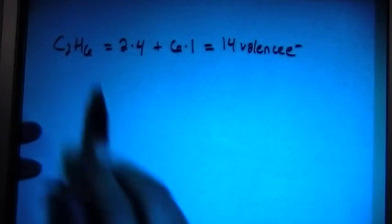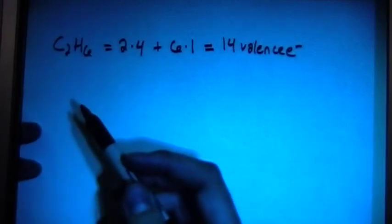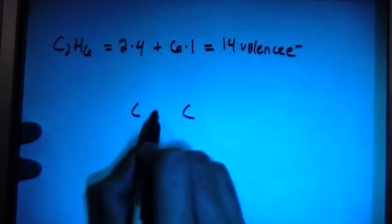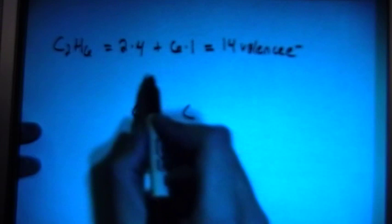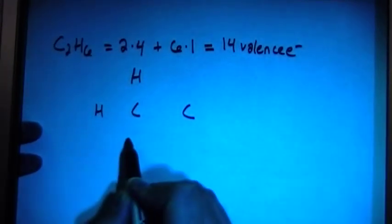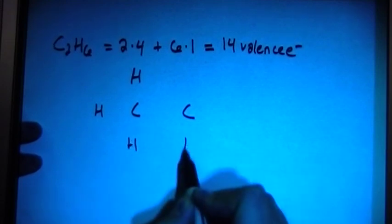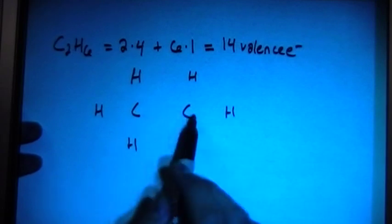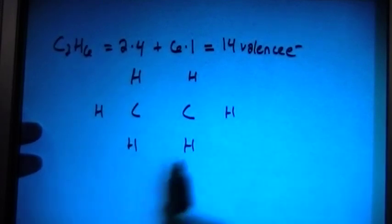Remember, hydrogens cannot be center atoms because they can only bond once. So the 2 carbons are going to have to be in the center. And we can go ahead and attach, well, let's just place the hydrogens first. Let's go ahead and put a hydrogen around each of the carbons. Like so. So now there's 2 carbons and 1, 2, 3, 4, 5, 6 hydrogens.